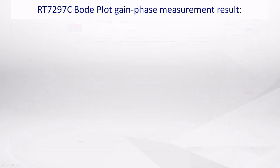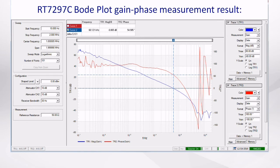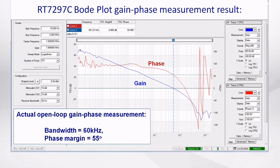When I compared these results with an actual open-loop gain phase measurement using a network analyzer, I measured a phase margin of 55 degrees and a control bandwidth of 60 kHz. So my simple measurement with the Load Transient Tool was actually pretty close.